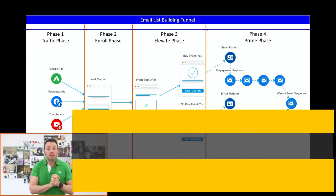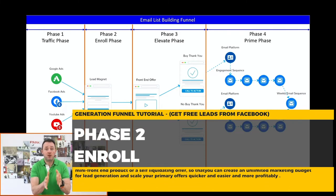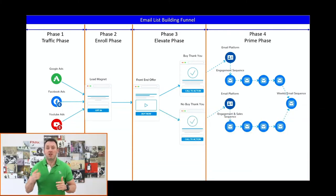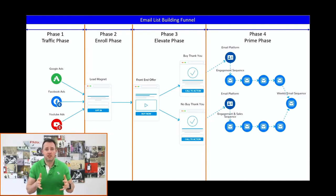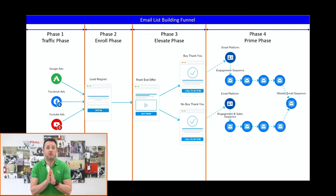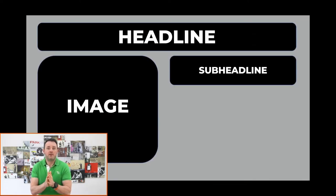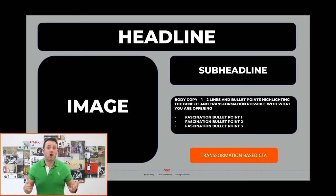Phase two is the enroll phase. The success of your funnel will largely be dictated by the conversion rate of your landing page. When it comes to launching an opt-in landing page for a lead magnet, there are only five elements that should feature on the page: headline, subhead, image, body copy, and call to action. Here is the default landing page layout I always start with.